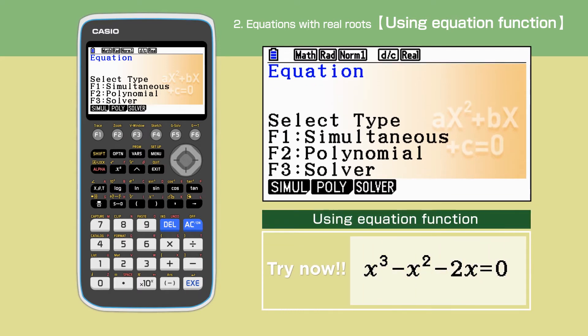We are going to look at the equation x cubed minus x squared minus 2x equals 0. There are three possible ways to work this out with this calculator.